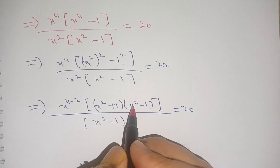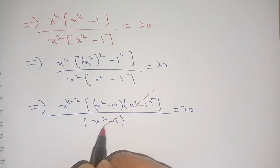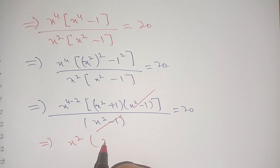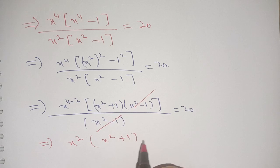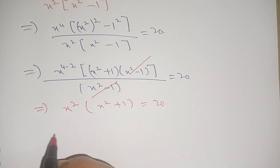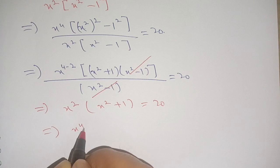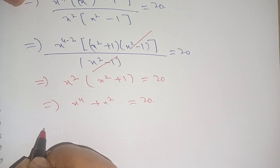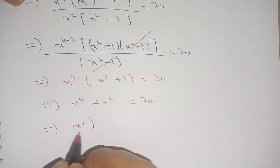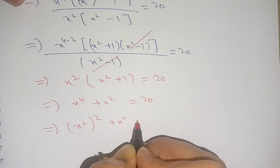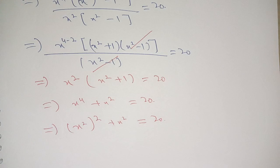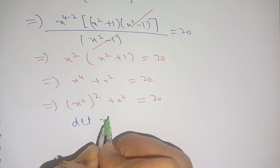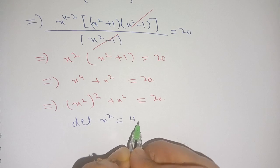From here we can cancel (x² - 1) in the numerator with (x² - 1) in the denominator. We get x²(x² + 1) = 20. Expanding the multiplication we get x⁴ + x² = 20. We can write this as (x²)² + x² = 20.